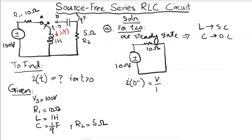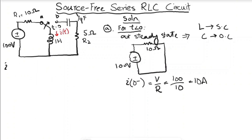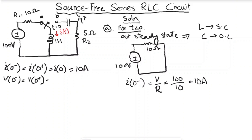At t less than zero, the current is i = V/R = 100/10 = 10 amperes. Because the inductor current does not change abruptly, i(0⁻) = i(0⁺) = i(0) = 10 amperes. For the capacitor voltage, since there is no closed loop through the capacitor when the switch is at terminal A, v(0⁻) = v(0) = 0 volts.